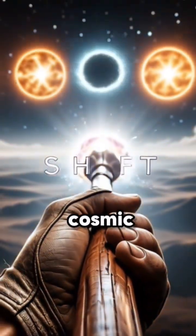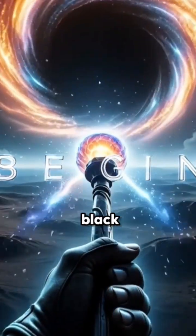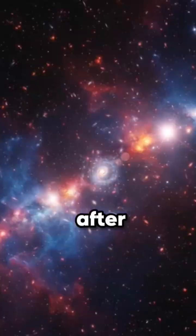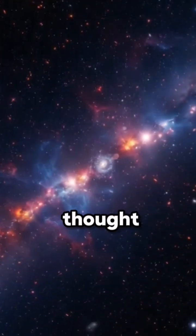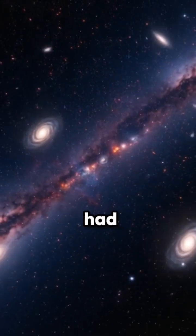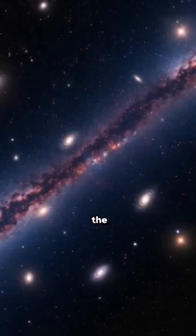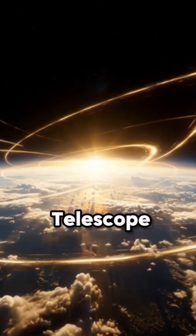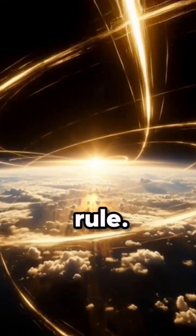Astronomers have a cosmic puzzle. How did massive black holes form so quickly after the Big Bang? We thought the galaxies around them had to grow fast, but the James Webb Space Telescope just found something that breaks that rule.